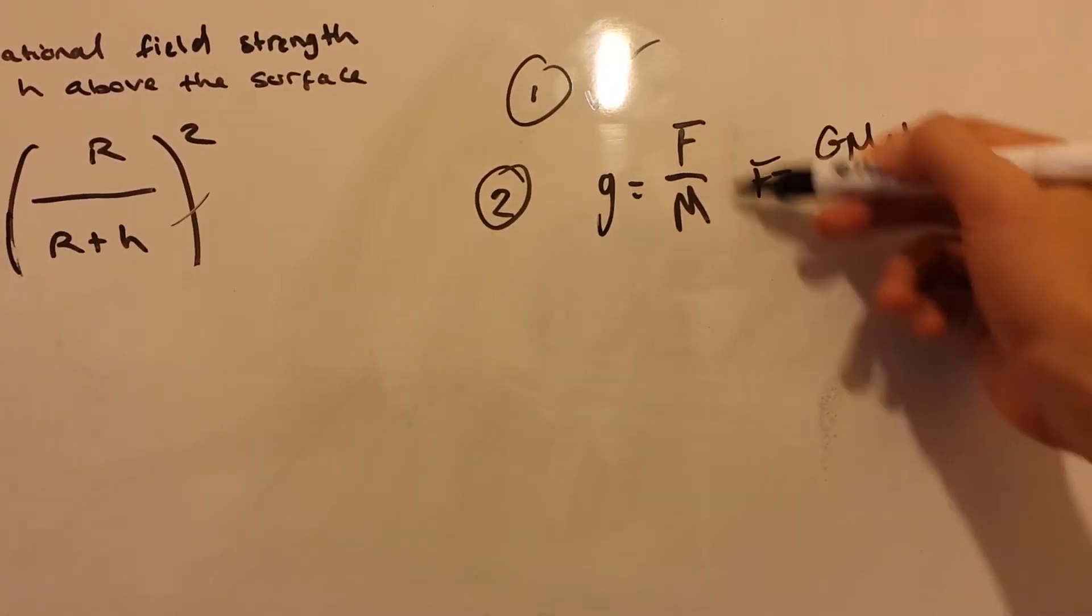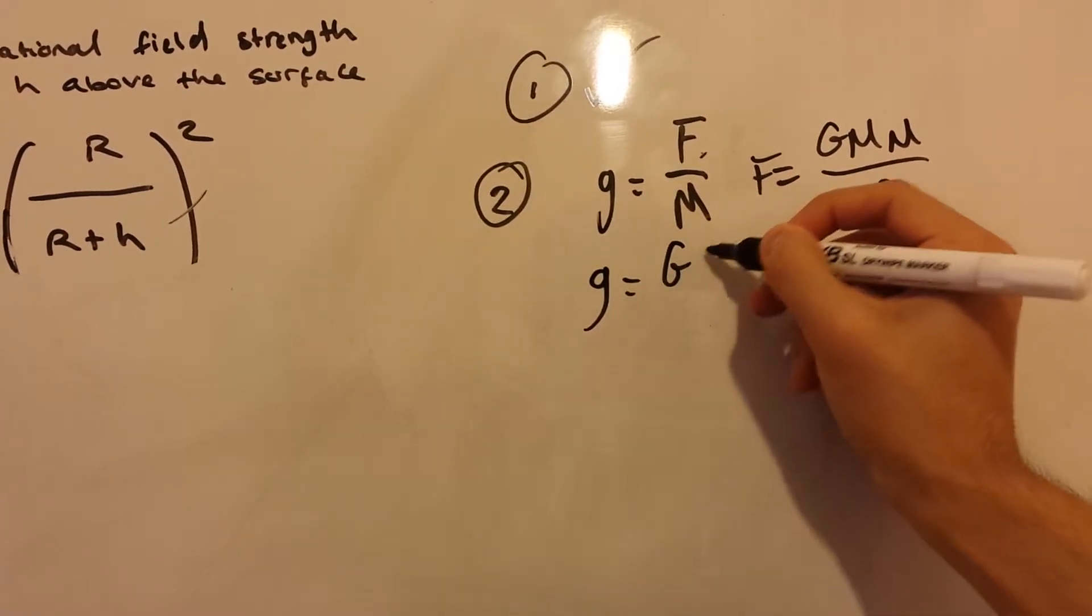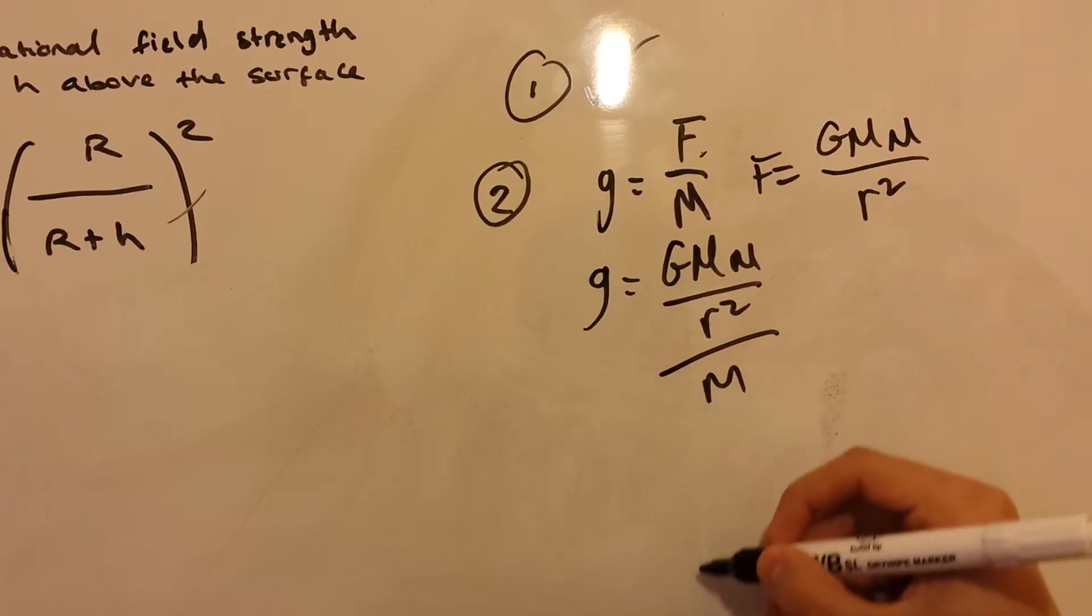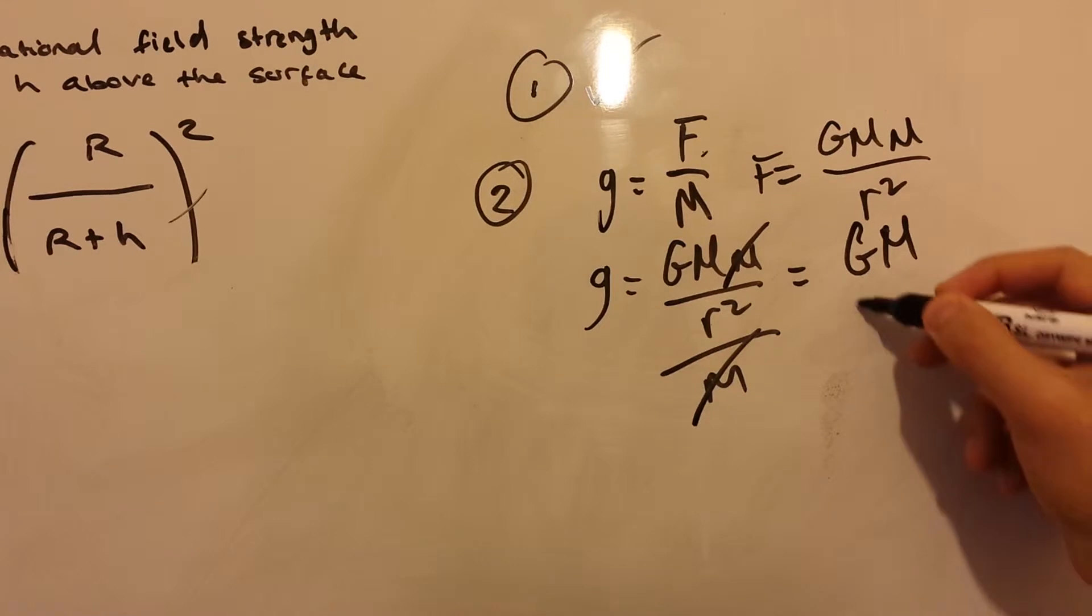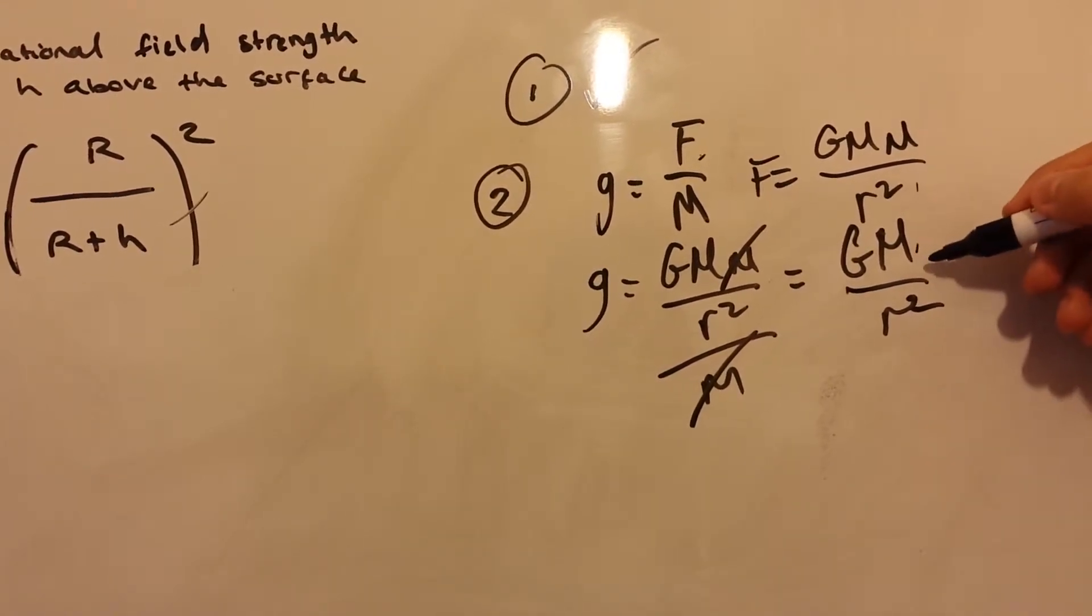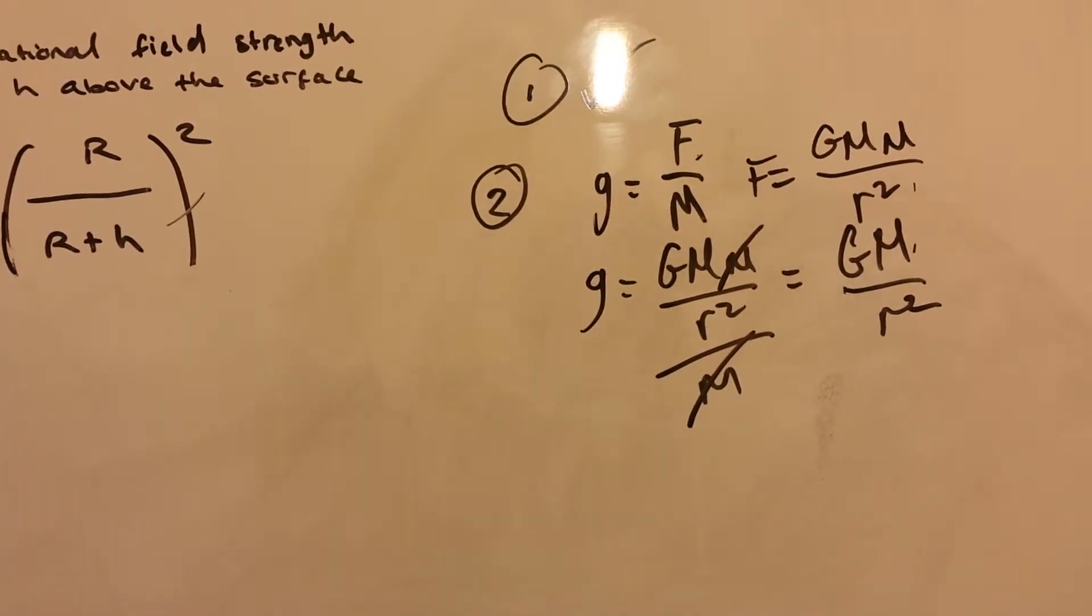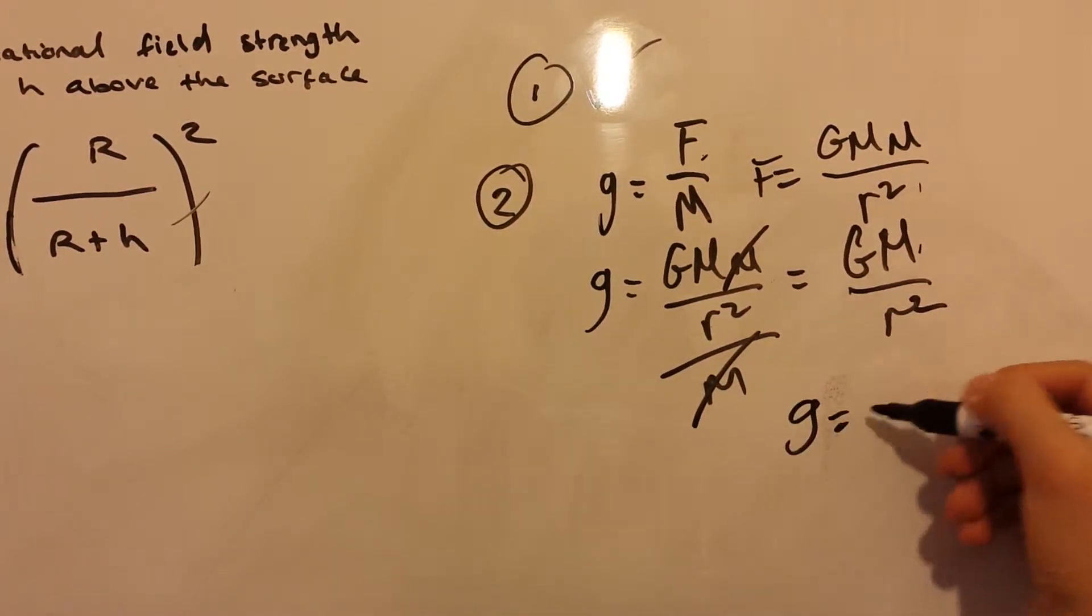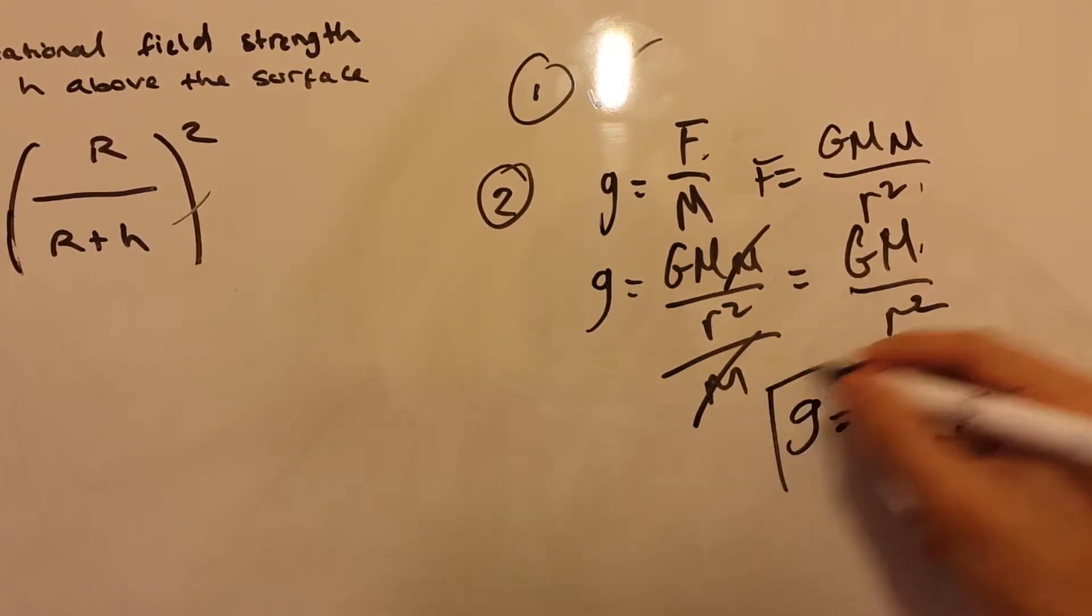So, let's substitute this into here and see what we get. These two cancel out, and so we get constant of proportionality times by the big mass over r². And so, that's the general equation for gravitational field strength.